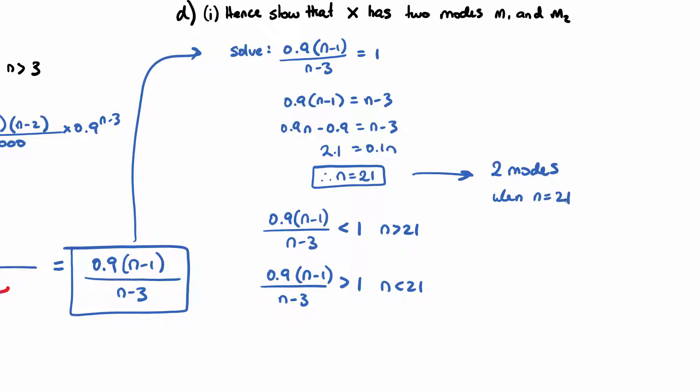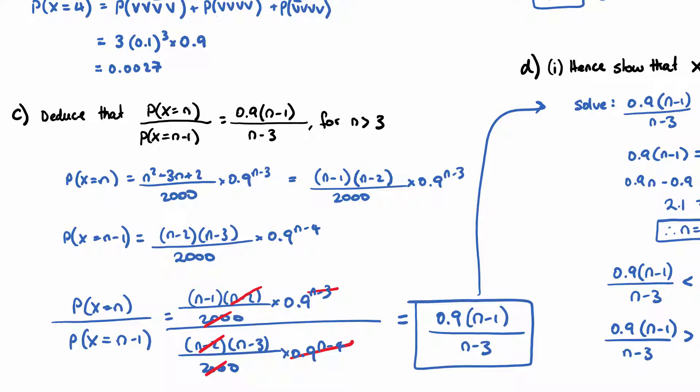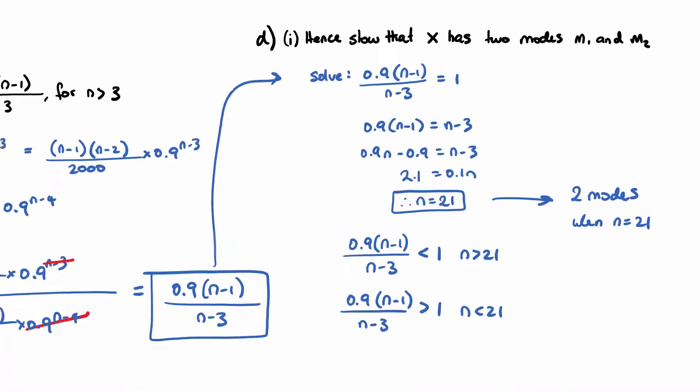So when N is 21, therefore the probability will be 21 on top and 20 on the bottom, and they will be the same, because if this was 21, this is 21. So we're going to get the probability of 21, probability of 20, that would be equal to 1.